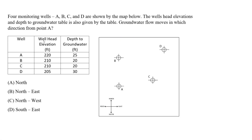Let's look at an example where we want to determine the direction of flow when we have groundwater. For this FE-type question, we have four monitoring wells. These wells are typically installed to determine the direction of flow, and the wells are A, B, C, and D, shown by the map below.